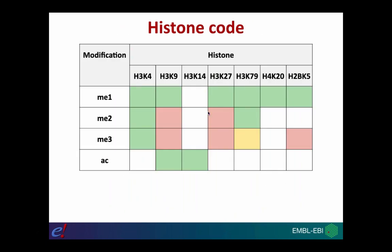Different post-translational modifications are associated with either up-regulation or down-regulation of gene expression in a genomic region. The actual level of gene expression observed will be the result of the combination of all different post-translational modifications in a genomic region at a particular time, as well as other factors such as DNA methylation, transcription factor binding, and the pattern of open and closed chromatin. This is one part of the complex machinery involved in regulating gene expression.